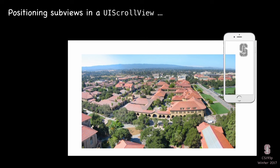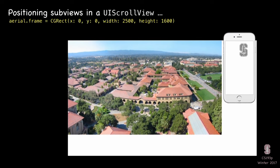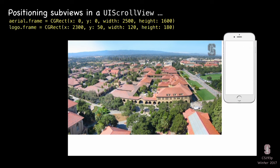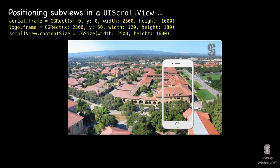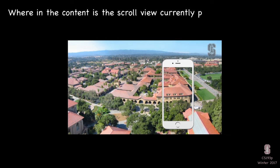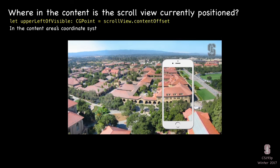If you forget to set the content size, scroll view will not work. That's what you forget. Remember nothing else from this lecture — remember that. Once it's scrolling around, you can find out information about where it is. You can find out the upper-left corner using 'scrollView.contentOffset', which gives you the X and Y of the upper left corner of where the view currently is.